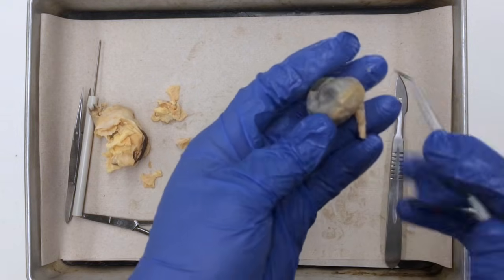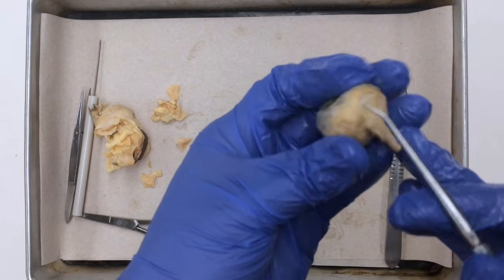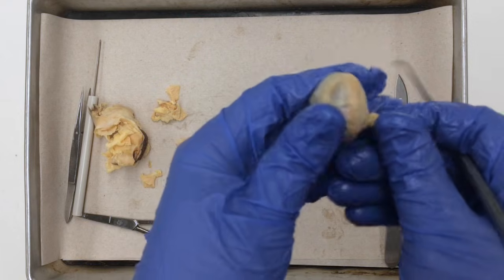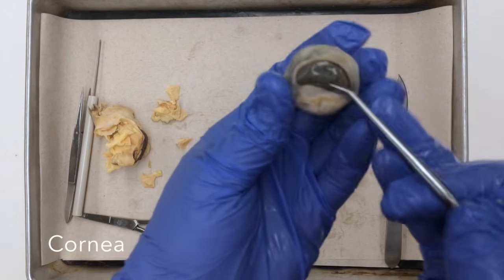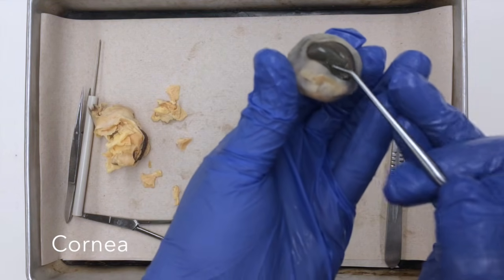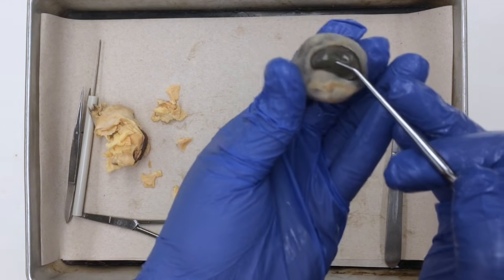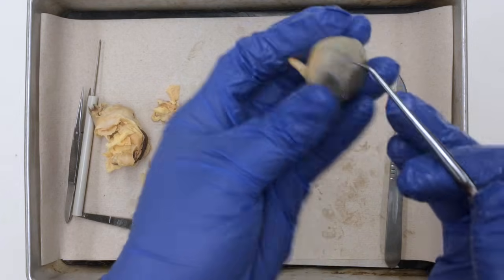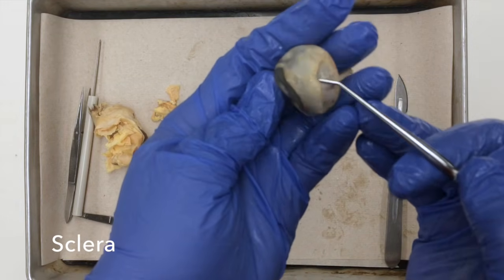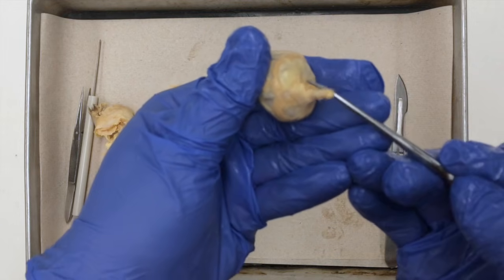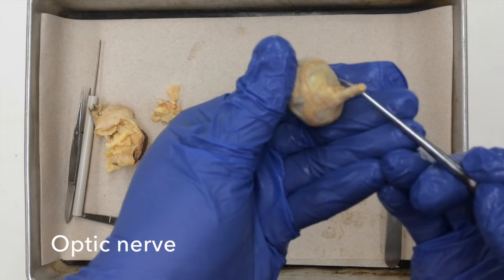Now that we have removed all of the connective tissue, the extraocular muscles and the fat from the eyeball, you can identify the cornea, which under normal conditions should be translucent, but since it's been sitting in solution, it's kind of opaque now. The sclera, which is the white of the eye, and the optic nerve or cranial nerve number two.